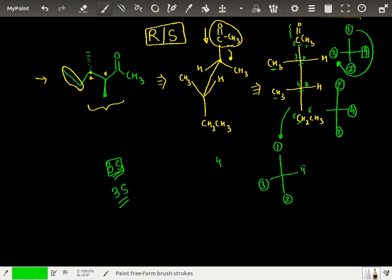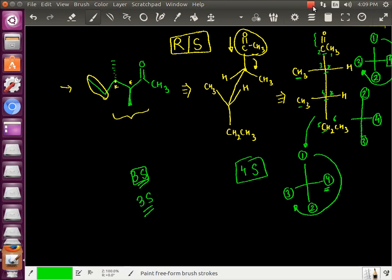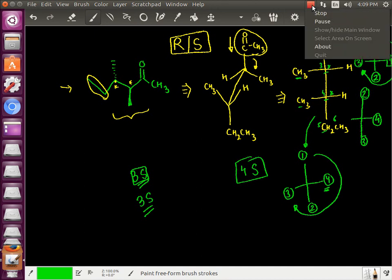So drawing a circular arrow from 1 to 3 from side of 2, it should have been R. But look at the position of 4. It is on the horizontal line. So it is again S. So both the configurations, 3 is also S and 4 is also S. Thanks for watching this video. Hope it helped you in understanding what the R/S configuration is. Take your time, take it easy and make it easy.